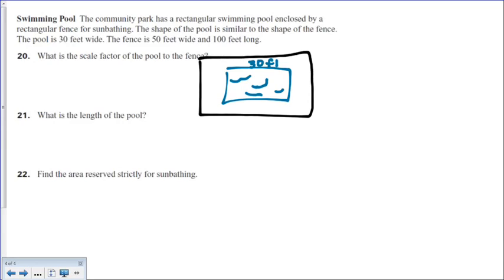So I should probably do it the other way. So 50 feet wide, whoops, too far. All right, so the pool is 30 feet wide. The fence is 50 feet wide and 100 feet long.